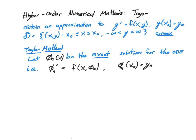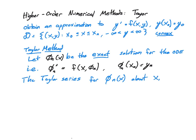So if n is equal to zero, for example, then this would be x sub zero and y sub n, and that would be part of the solution. Now, the Taylor series for phi sub n of x — I'm going to expand this about the point x sub n.